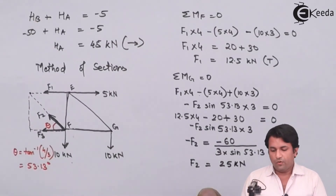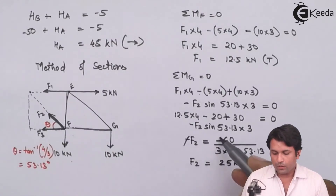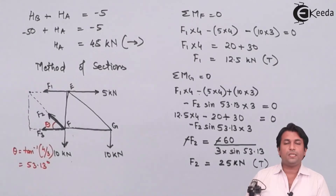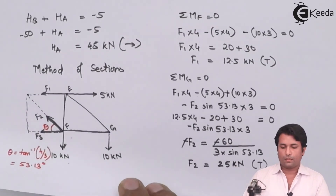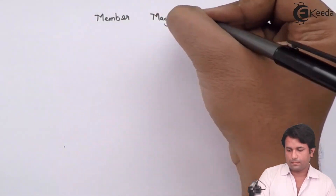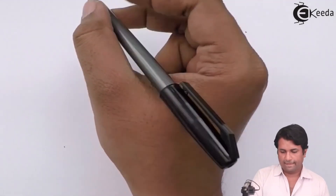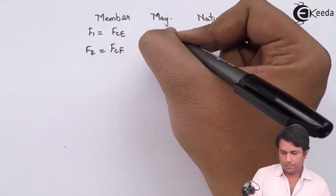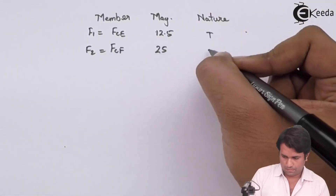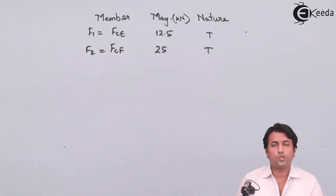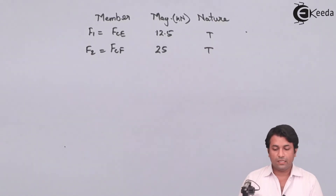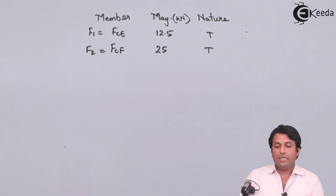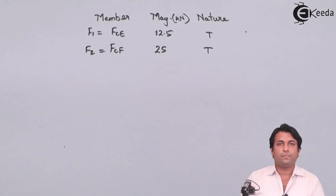The value for F2 comes out as 25 kN, which is a positive value. Now I tabulate the results: the forces in selected members CE and CF have both been determined, and the nature of both members is tensile force. The method of sections is an easy and less time-consuming approach compared to the method of joints. Thank you.